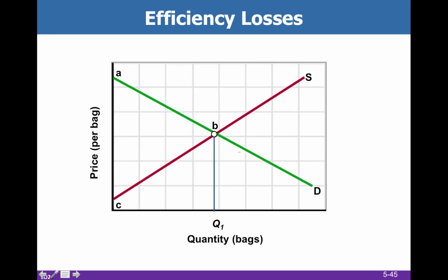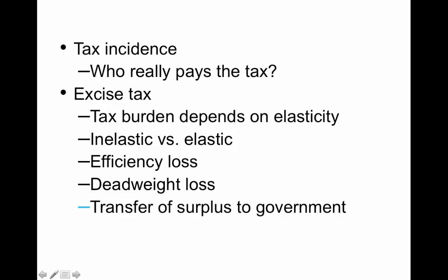Now, instead, let's say we overproduce — we make Q3 rather than Q1. We're making too much, and that is also an efficiency loss, and we can do the same calculation.